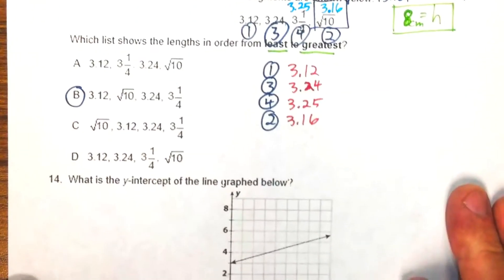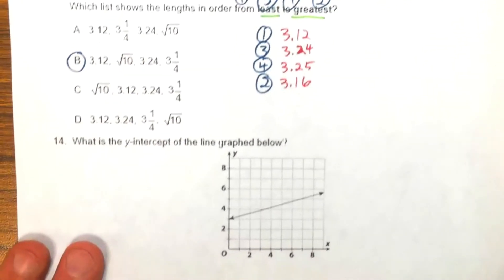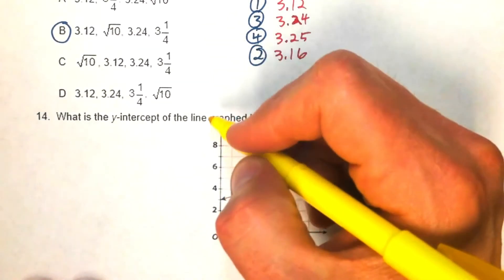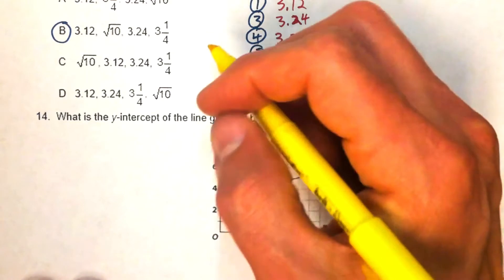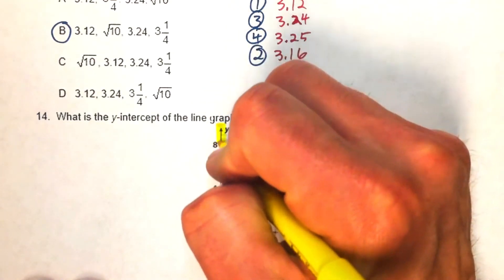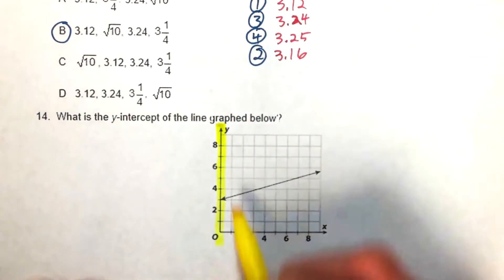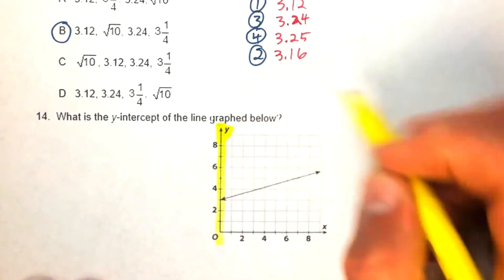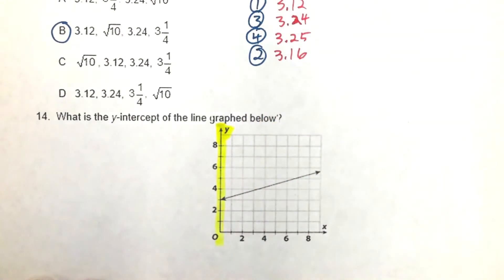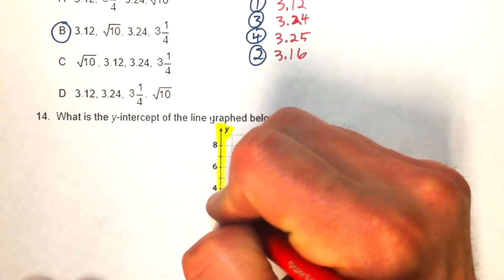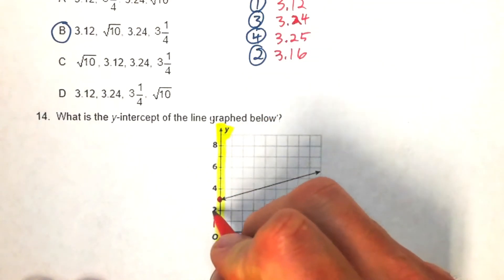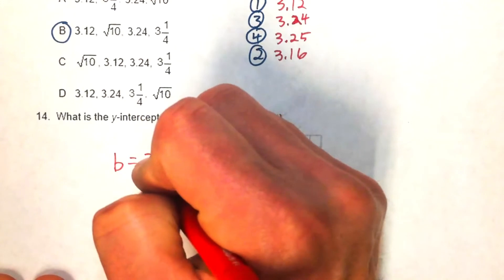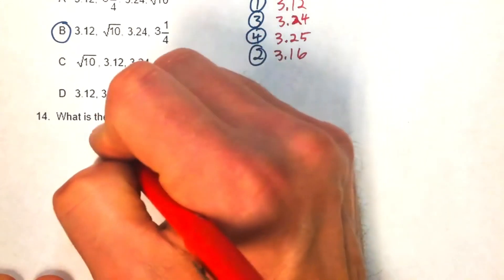Problem fourteen: find the y-intercept of the graph. The y-intercept is where the line crosses the y-axis. Reading the graph, the line crosses at y = 3. The y-intercept is 3.